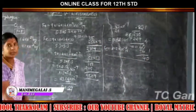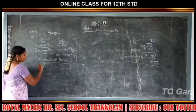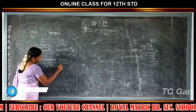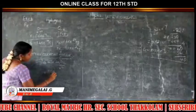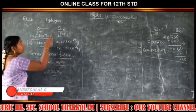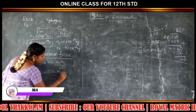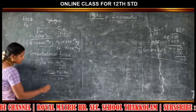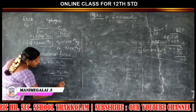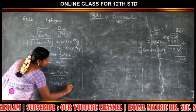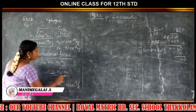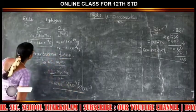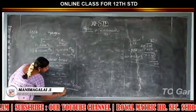Next, let us calculate the gravitational force. According to Newton's law of gravitation, FG equals G times M1 times M2 divided by R squared. Here M1 is the mass of the proton and M2 is the mass of the electron. The gravitational constant G is 6.67 into 10 to the power minus 11, mass of proton is 1.6 into 10 to the power minus 27 kilogram, mass of electron is 9.1 into 10 to the power minus 31 kilogram, and R is 5.3 into 10 to the power minus 11 meter, squared.